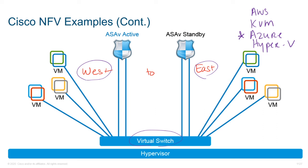The ASAv runs on AWS, KVM, Azure, and Hyper-V. There's an asterisk next to Azure — that is actually the flavor that can support HA, or high availability. The reason it's currently only supported on Azure is due to their link-local multicast and broadcast support, which is needed for HA to work.